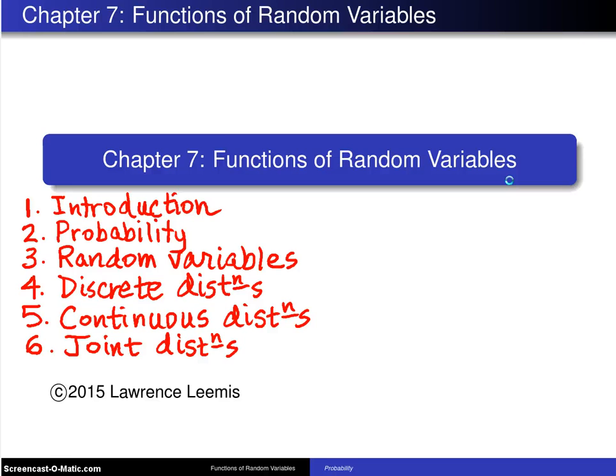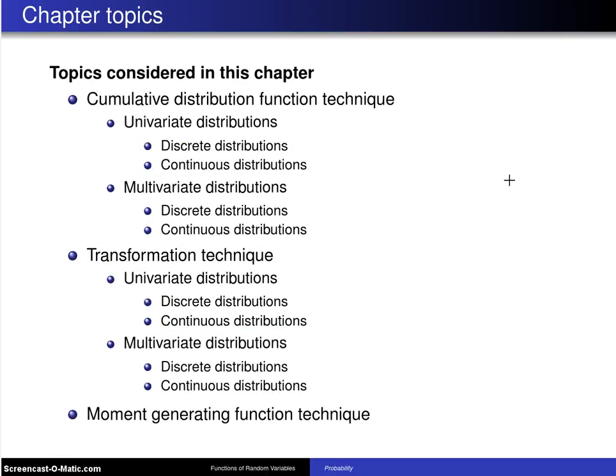Here is the outline for this chapter. There are basically three different techniques that are done. This is section 7.1, section 7.2, and section 7.3. The first is the cumulative distribution function technique. This is the very same CDF technique that was introduced way back in chapter 3, but this time we're going to go into it in a lot more detail.